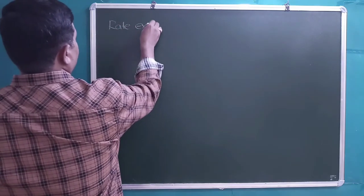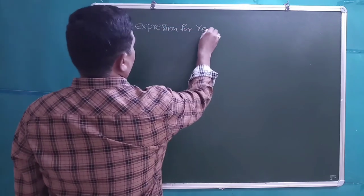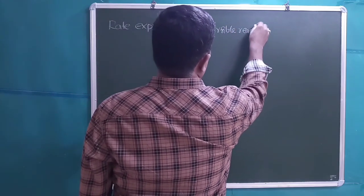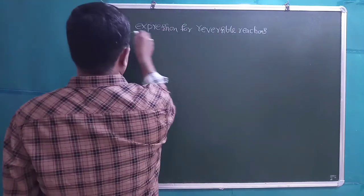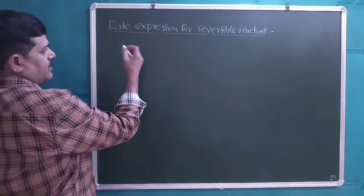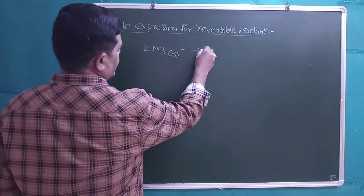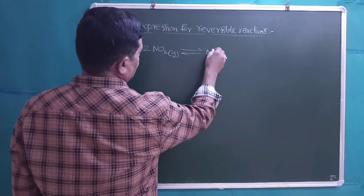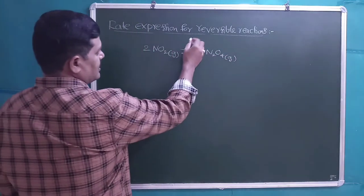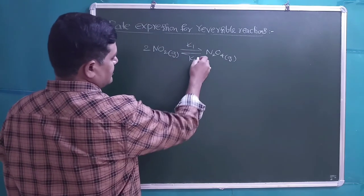Let us consider a reversible reaction: 2NO₂ gas is in equilibrium with N₂O₄ gas. Let us assume that for the forward reaction the rate constant is K1, and for the backward reaction the rate constant is K2.